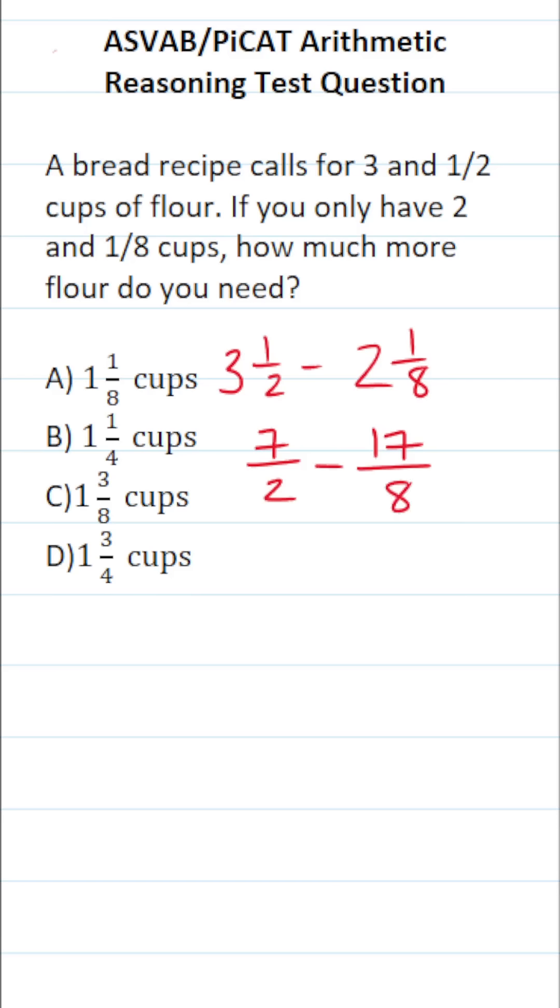Now that we converted these mixed numbers to improper fractions, we're subtracting fractions. And in order to subtract fractions, they have to have the same or a common denominator. Two and eight both go into eight. So we're going to rewrite one of these such that it has a denominator of eight.